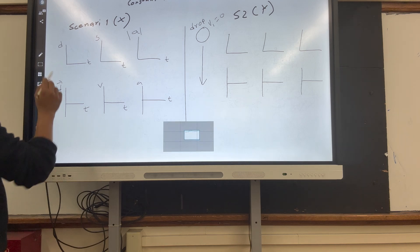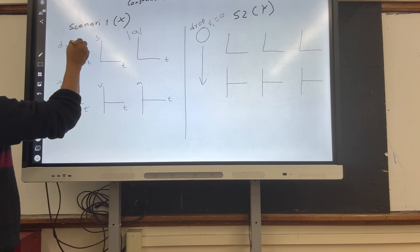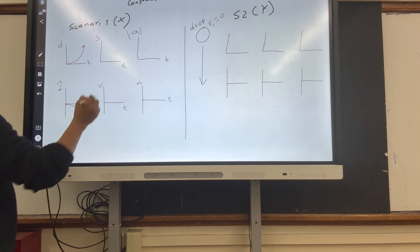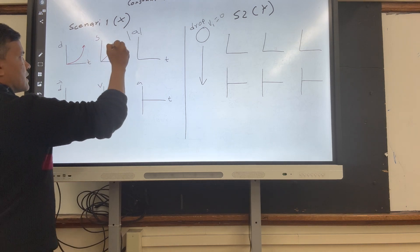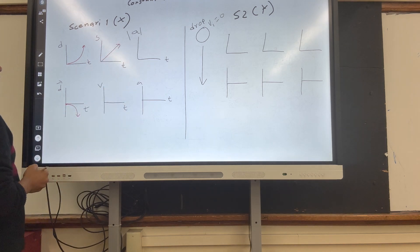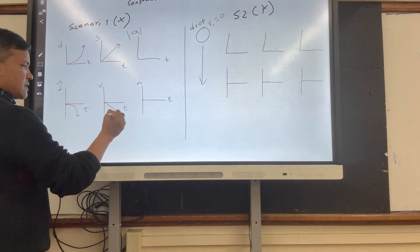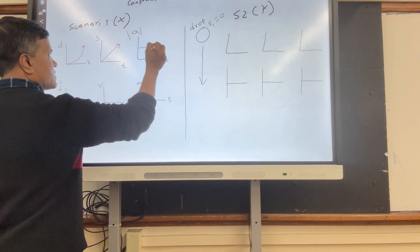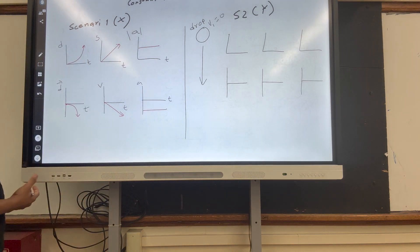For the car problem, this is constant acceleration, so displacement versus time is quadratic. Velocity versus time is diagonal. Acceleration versus time is horizontal — horizontal at the negative direction.